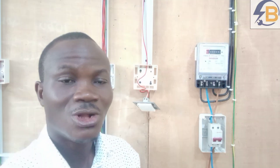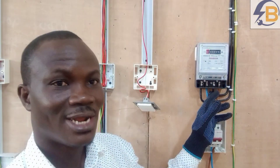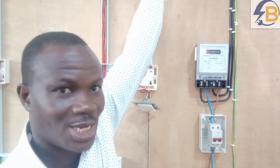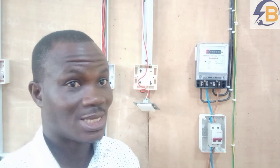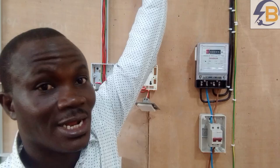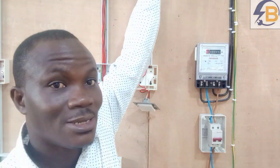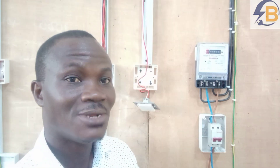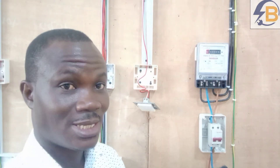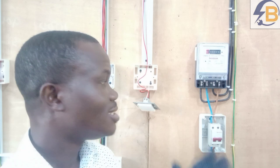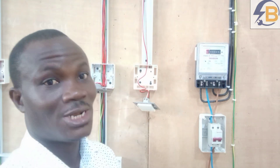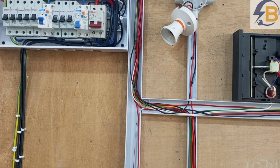On the other hand, continuity finds out if the cable connected from this point to the consumer unit is continuous without any break. The testing procedure is the same: we use one test lead here and the other test lead at the right terminal in the consumer unit. By doing a polarity test we can also ascertain continuity of that particular line, so checking polarity will also help us find out if the cables are actually continuous.